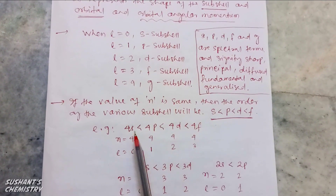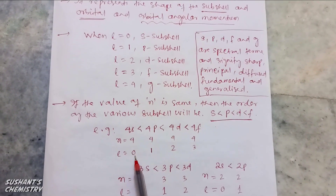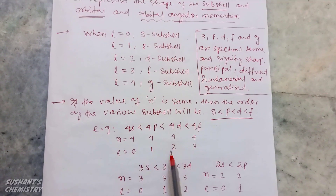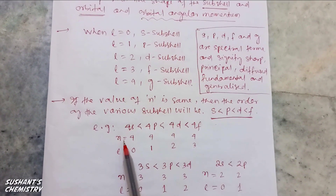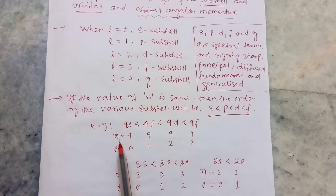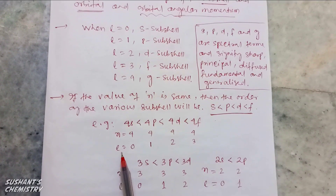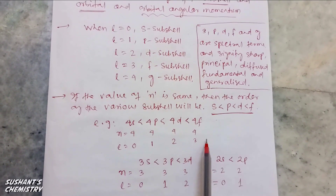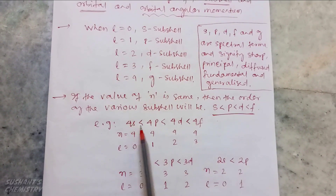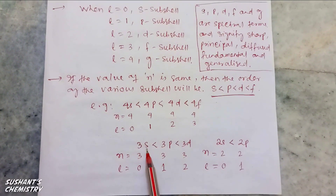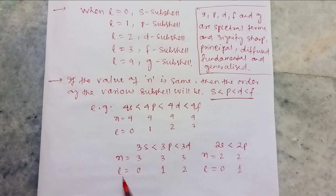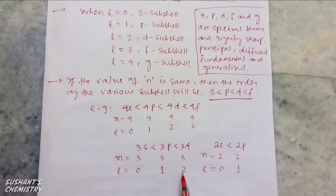For 4s sub-cells the value of n=4, l=0; for 4p n=4, l=1; for 4d n=4, l=2; for 4f n=4, l=3. That means the value of n remains constant but the value of l gradually changes. This means the energy also increases gradually from 4s to 4f sub-cells. Similarly, for 3s, 3p, and 3d sub-cells, the value of n remains constant but the value of l gradually changes: 0, 1, 2.